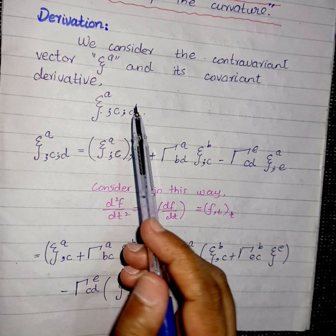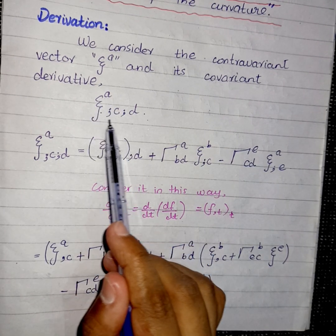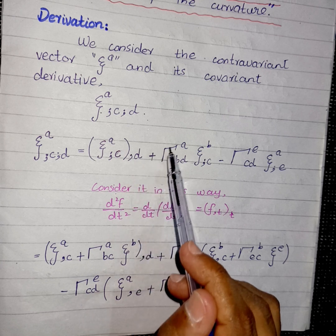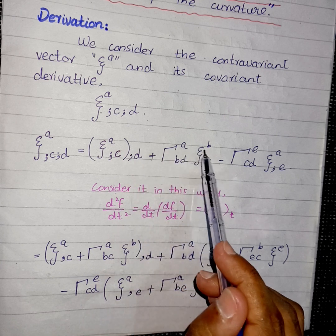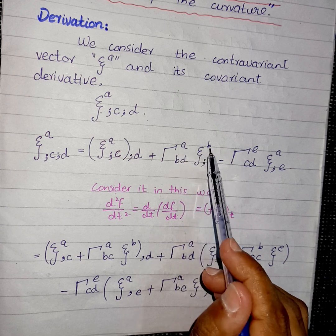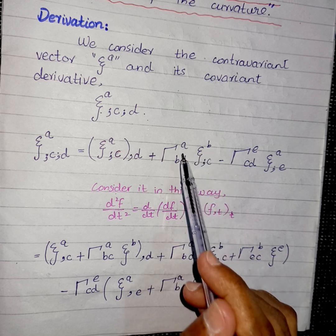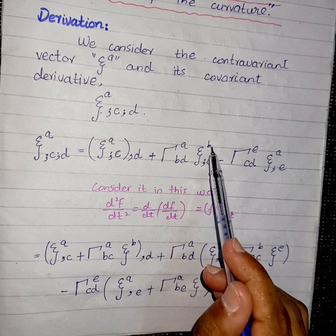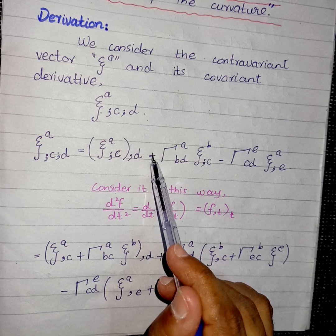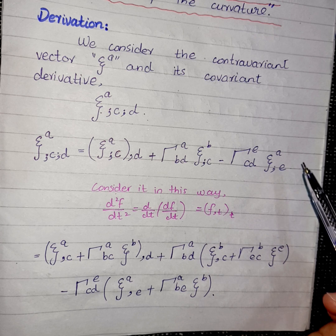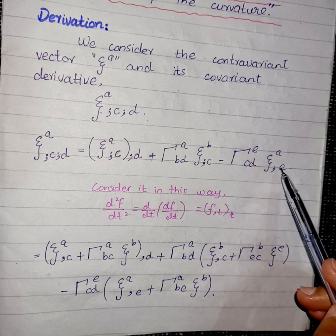First, we consider this quantity as it is and take its partial derivative with respect to D, plus Γ^A_BD times ξ^B semicolon C. Here B replaces A and B is used as a dummy variable. As we are replacing the contravariant index, we write a positive sign here. Now we will replace the covariant index, so we use the dummy index A.